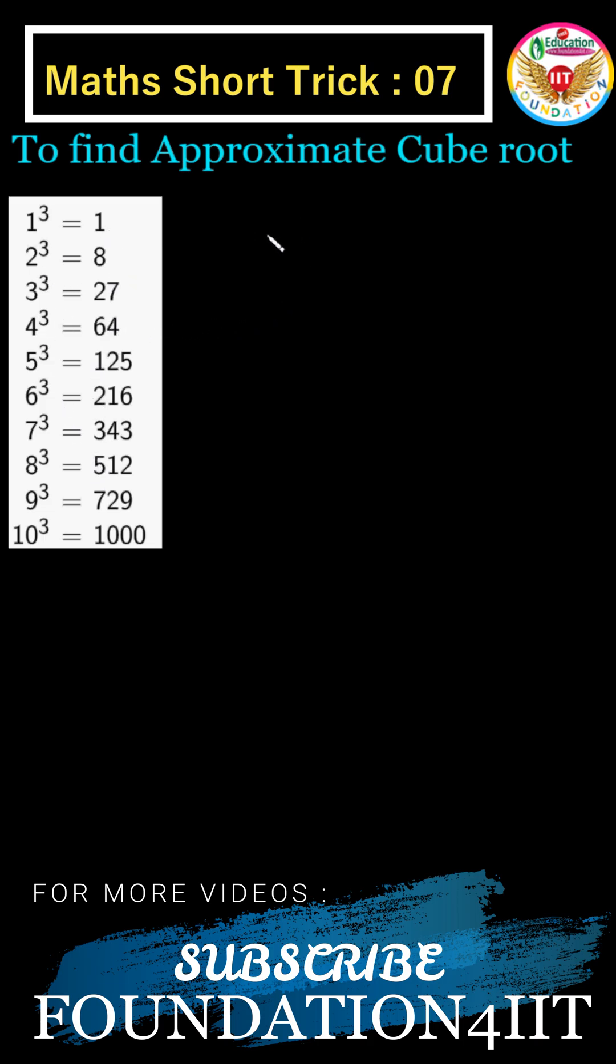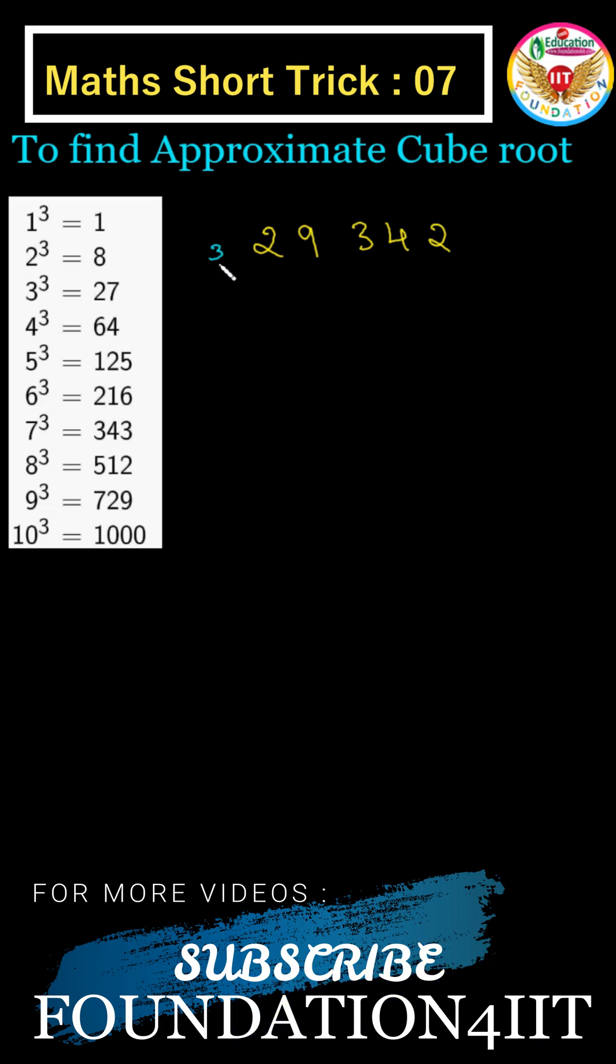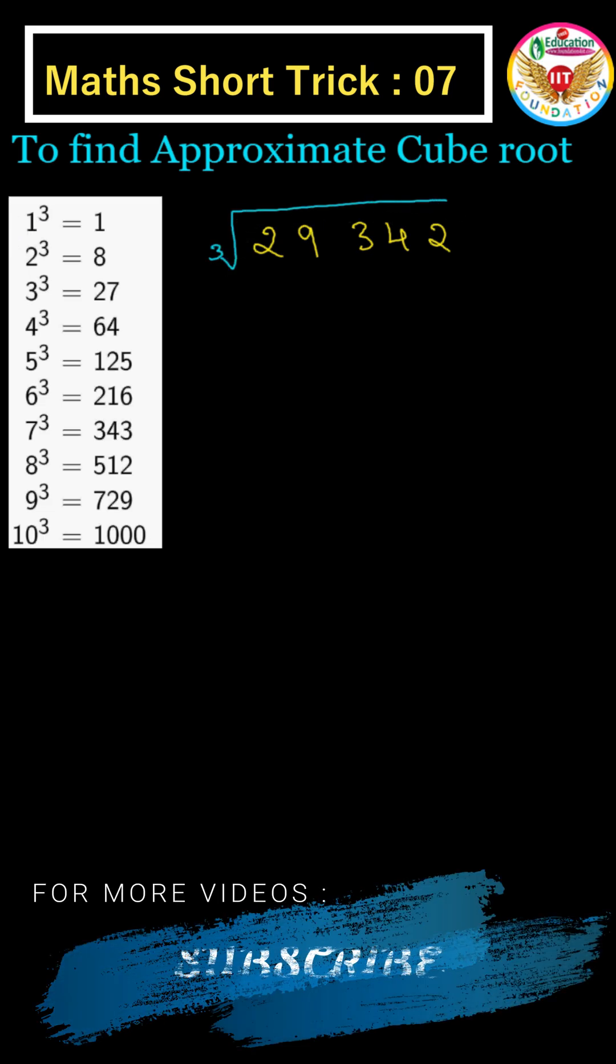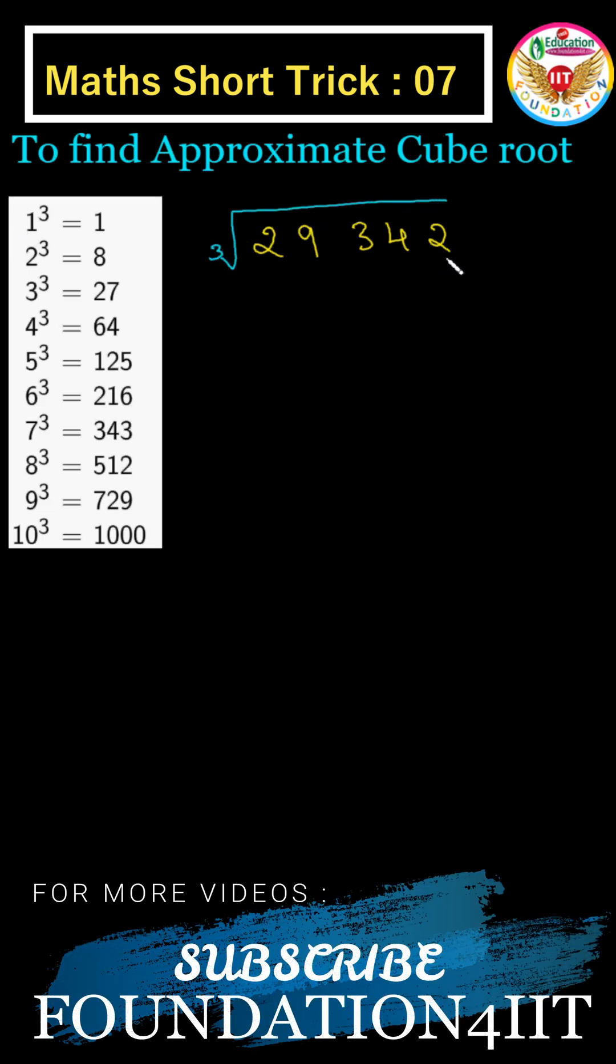Apart from this, for example, the question is given 29,342 approximate cube root, because this is not a perfect cube. So for approximate cube root, if you take the pattern like the previous, it ends with 2, right.